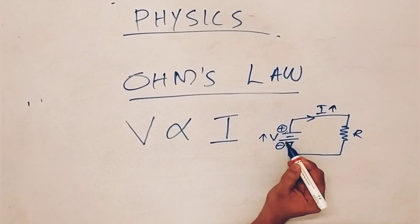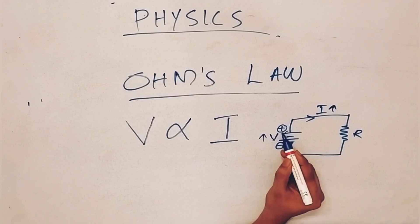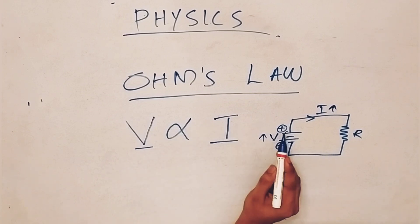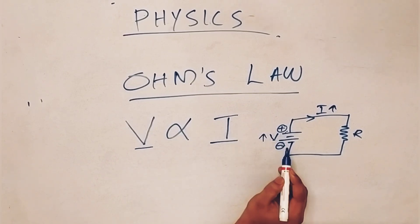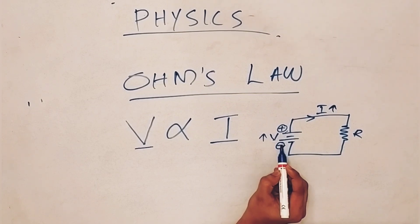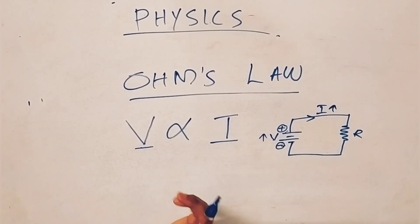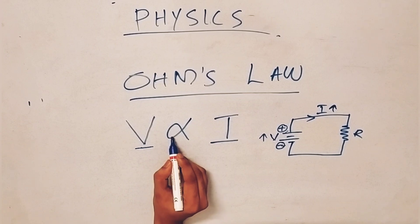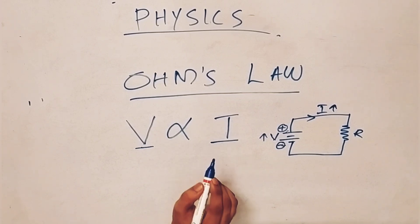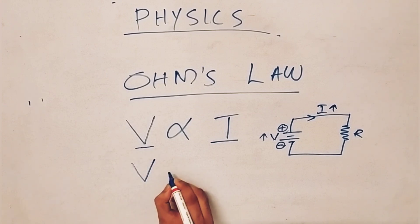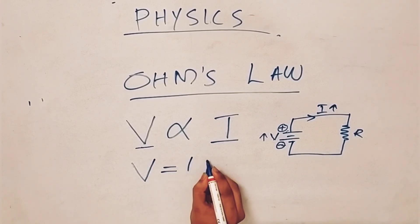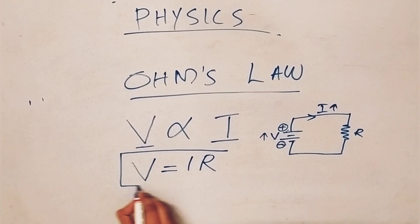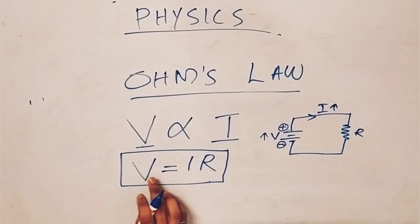What we call voltage and potential difference — the potential difference is the voltage directly proportional to current. This is the basic equation we call. V equal to IR. V equal to IR.